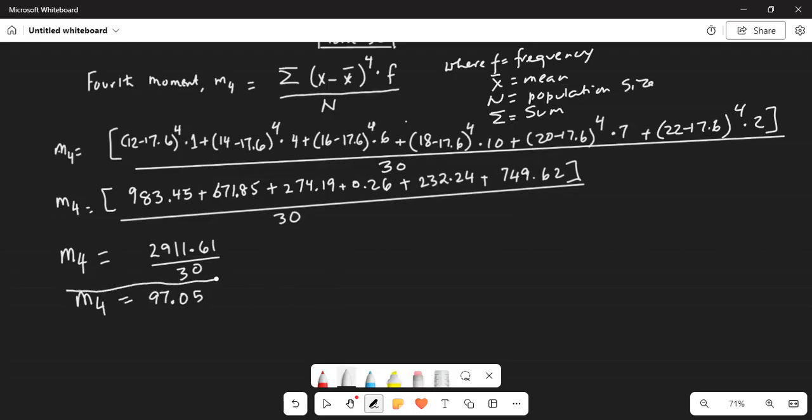So I will highlight it. That's the fourth moment around the mean for the grouped frequency data. When we say fourth moment we mean we take the deviation of each number from the mean x minus x bar. Take that difference exponent it or raise it to the power of 4 and then multiply with the corresponding frequency, do it for all the numbers and then add all the products. Do not forget to divide by the total population size. This is a kind of average measurement.